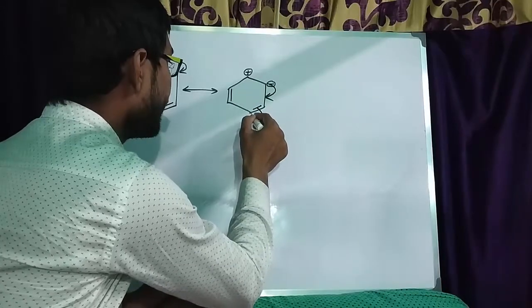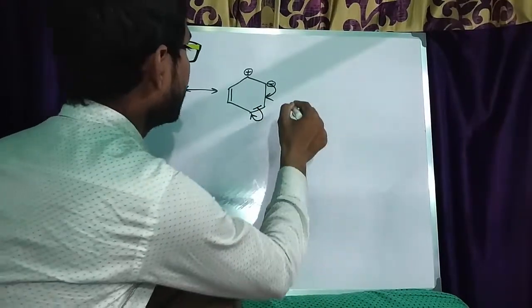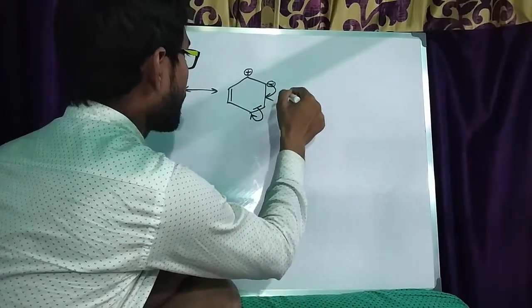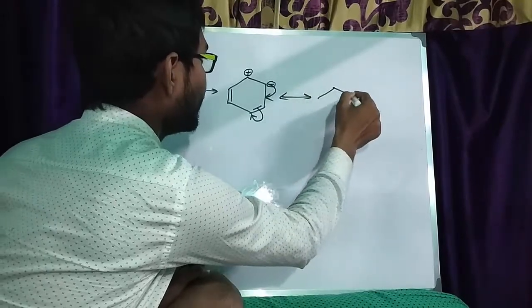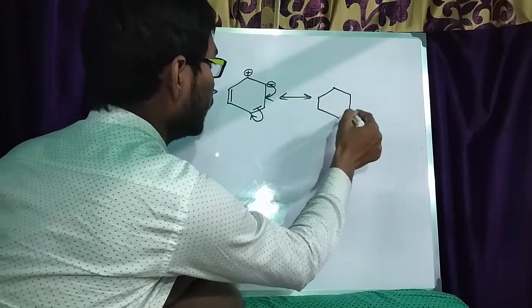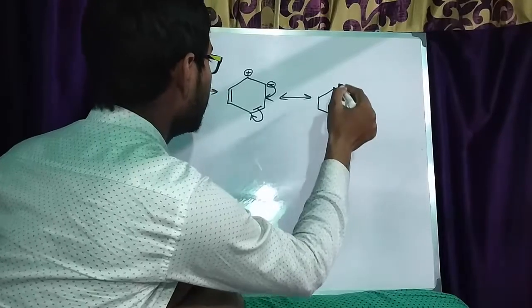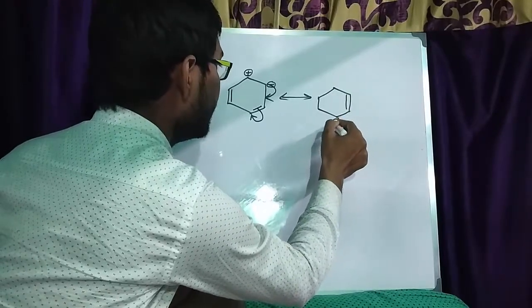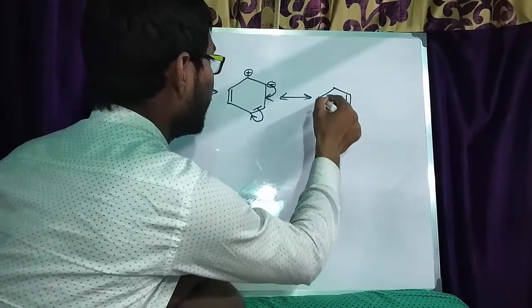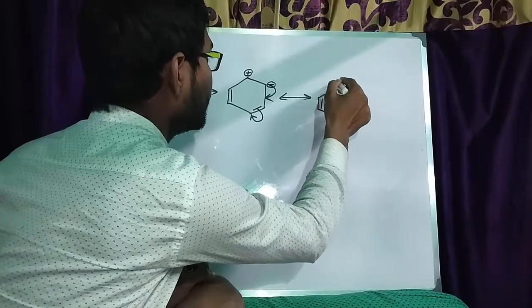And this bond will migrate on this carbon. And in the next step, we get the bond is here. And the negative charge on here. And here bond and this is the positive charge.